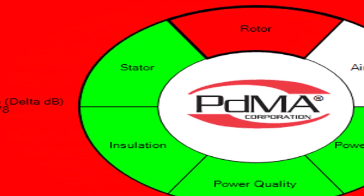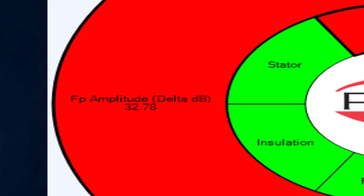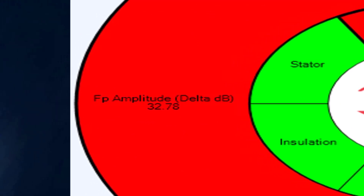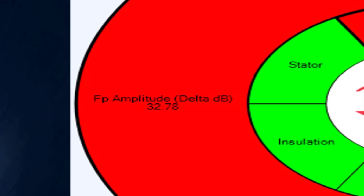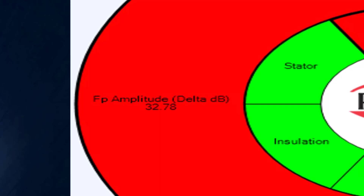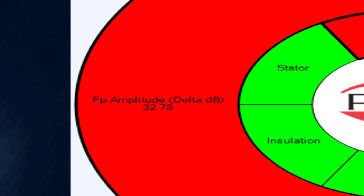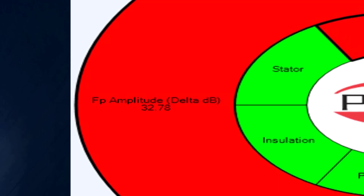Good question. PDMA has collected over the many years of motor testing industry standards from everyone — from IEEE, ESA, NEMA, EPRI studies — we've built all those standards into our caution and alarm set points, including PDMA standards that we ourselves have developed over the many years of analysis. Even though we're showing the rotor, which is in red, and the outer ring shows the actual set point for it, you could do the same for stator, insulation, power quality, power circuit, air gap — they all have numbers.